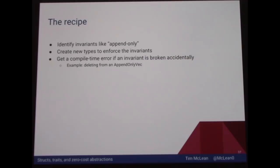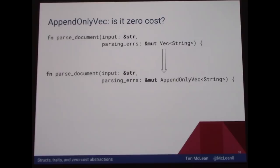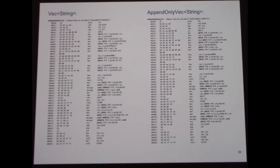The important question, if you care about performance, is: is this zero cost? Is there performance overhead to wrapping in this new struct? If you consider the two examples — a plain vector on top versus an append-only vector — and look at the machine code, it turns out the answer is they are identical, byte for byte. If you look at the generated executable files, they match exactly. So yes, it's a zero-cost abstraction — there's no cost in terms of runtime performance.